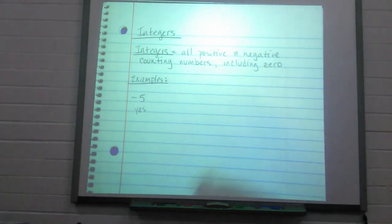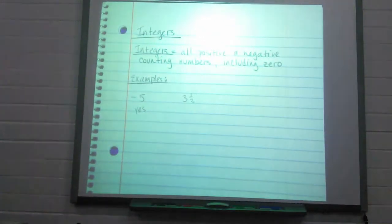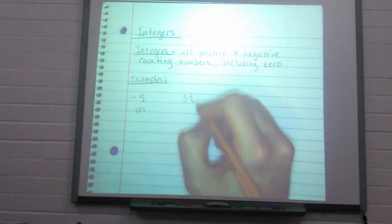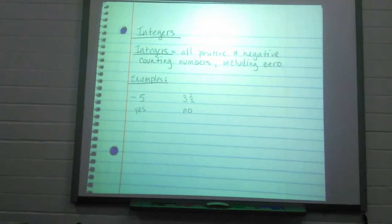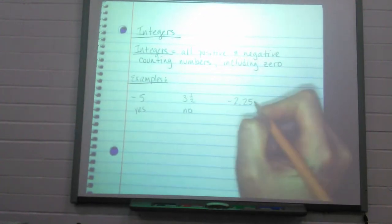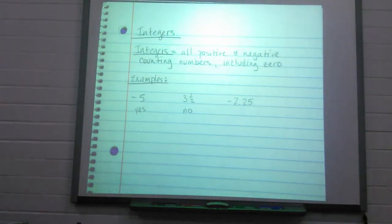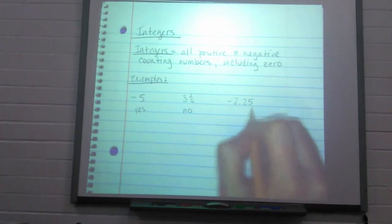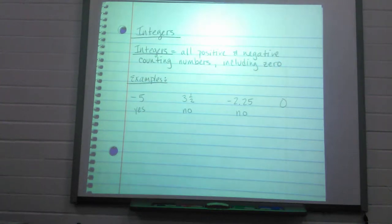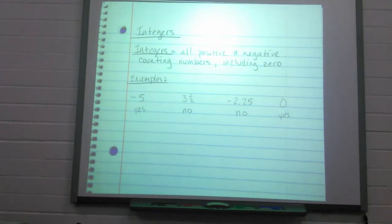What if I gave you the number three and one half? Would that be an integer? No, this is not an integer because it has that fraction on the end of it. What about negative two and twenty-five hundredths? No, because it has numbers after that decimal point. If I gave you zero, is that an integer? Absolutely — it's a counting number, so it's included in our definition. Yes, that is an integer.